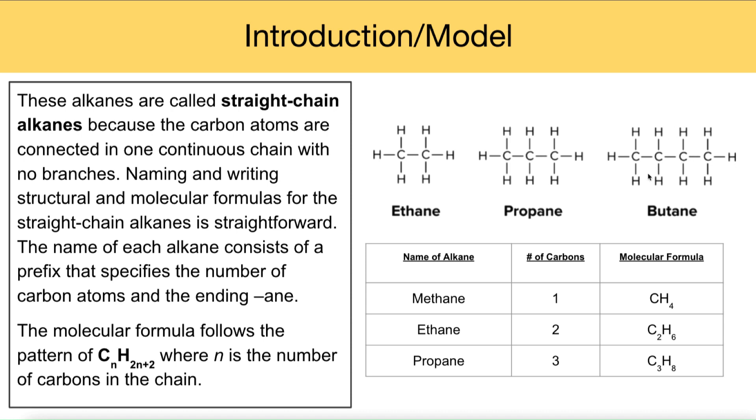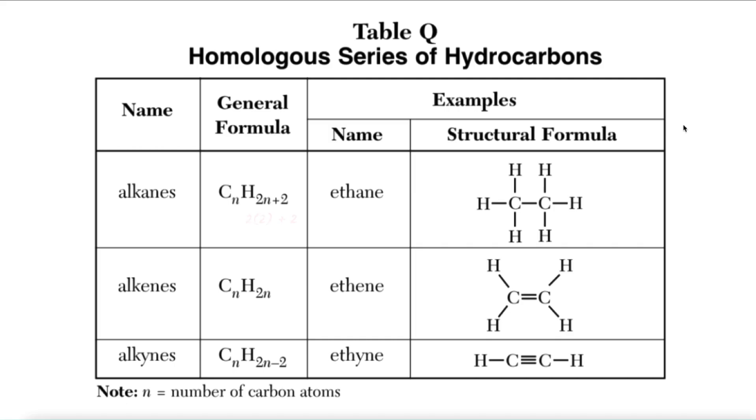So we have to remember for butane, all four of these carbons each have twice the number of hydrogens, so 4 times 2 is 8, plus the 2 on the end. That's where that formula comes from.